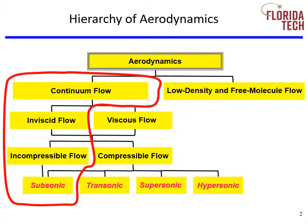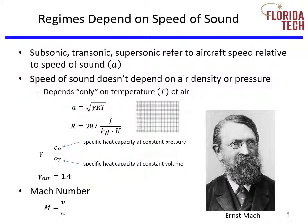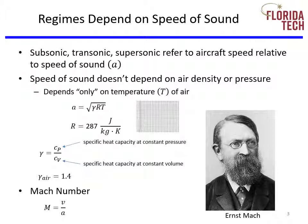The bottom four blocks are the flight regimes: subsonic, transonic, supersonic, and hypersonic. These regimes are defined by airspeeds relative to the speed of sound, which is given the symbol A. People often forget or are unaware of the fact that the speed of sound depends on just one thing: the temperature of the air, and that temperature needs to be in absolute degrees, either Kelvin or Rankine.